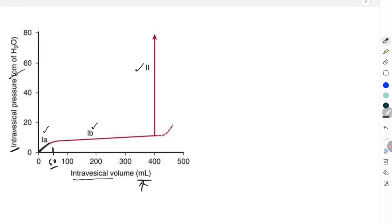With the rise in volume there is a rise in pressure. But what is happening with the second part, the 1b part, is that as the volume increases from 50 to almost 400ml, there is no increase in the pressure. This is the part which explains the property of the detrusor muscle, that is the plasticity.